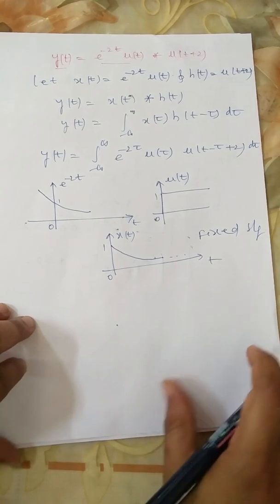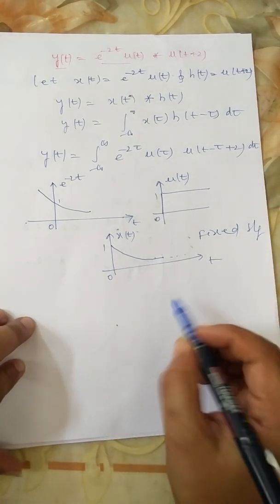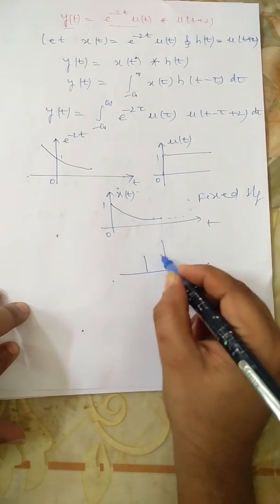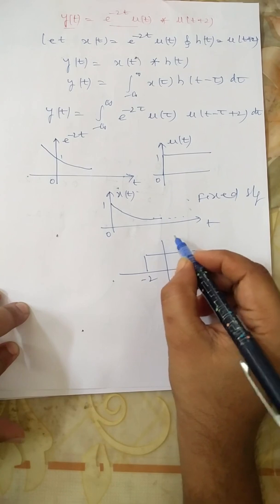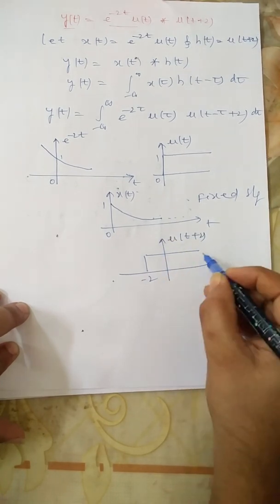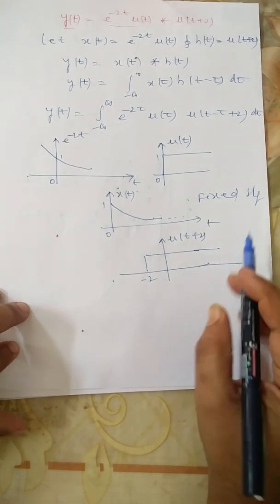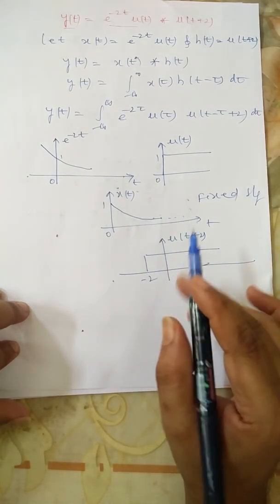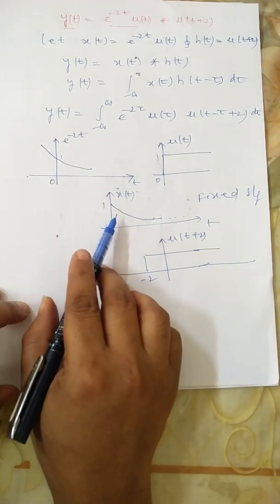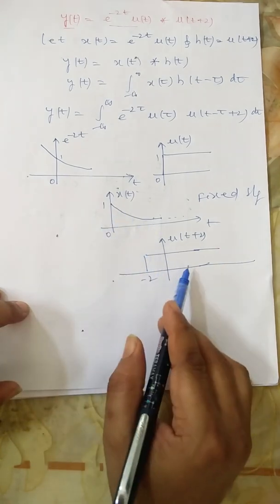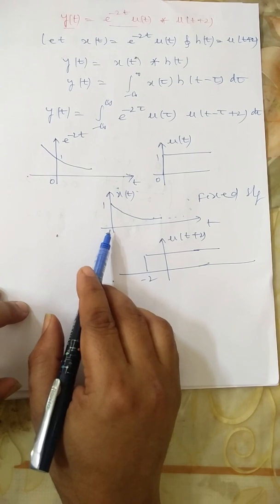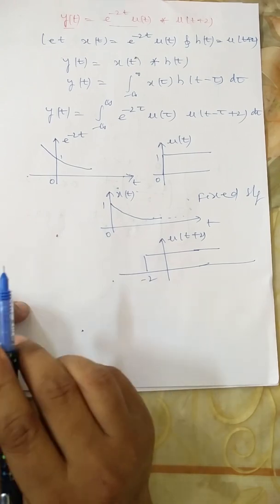The impulse response h(t) = u(t+2) exists from minus 2 to plus infinity. Since u(t) has value 1 from 0 to infinity, shifting it left by 2 units gives u(t+2) existing from −2 to +∞. Both x(t) and h(t) are infinite duration signals, and we need to convolve them.